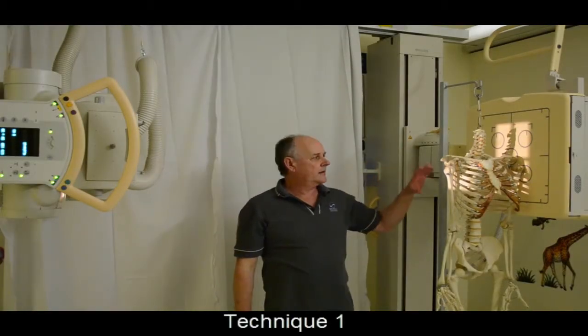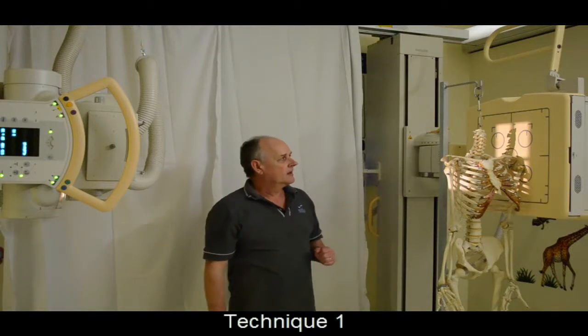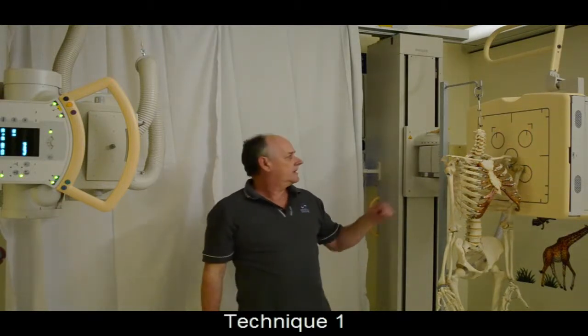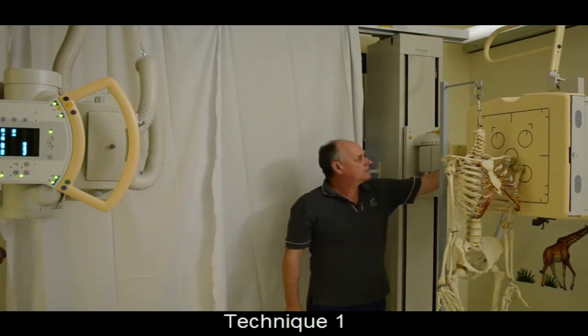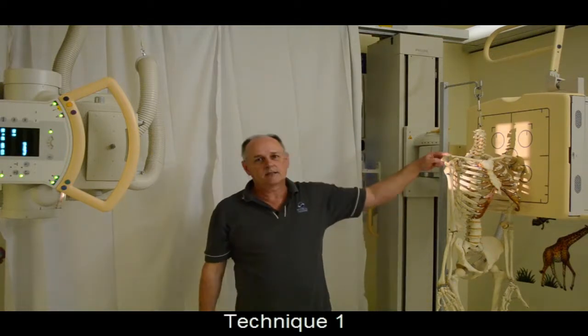In lateral cervical spine imaging of a dry skeleton, you can see that the central ray is centered to C7.